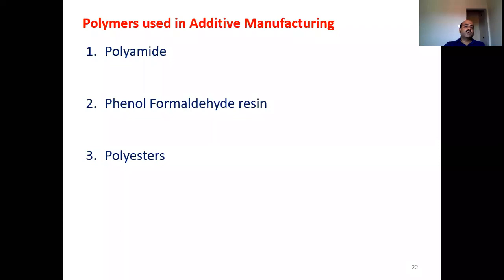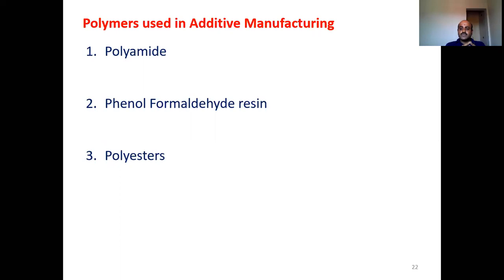Out of these materials, we will be discussing only three. The first one is polyamide, another one is phenol formaldehyde, and the third one is polyester. Of course there are plenty more, but our syllabus has given only these three. We will discuss these three polymers used in additive manufacturing, covering their chemical structure, applications, end uses, and advantages.